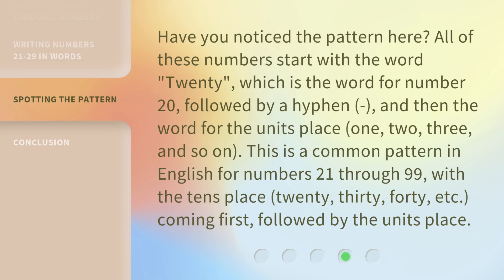Have you noticed the pattern here? All of these numbers start with the word "twenty", which is the word for number 20, followed by a hyphen, and then the word for the unit's place — 1, 2, 3, and so on. This is a common pattern in English for numbers 21 through 99, with the tens place (20, 30, 40, etc.) coming first, followed by the unit's place.